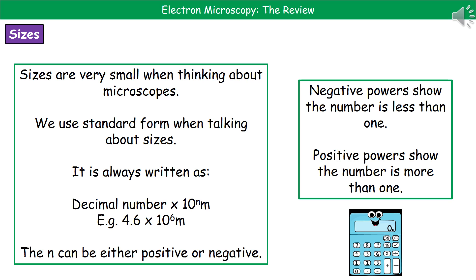One of the math skills you need on your GCSE science papers is standard form. Because when talking about microscopy we're dealing with very tiny things, we use standard form. You always write it as a decimal number times 10 to the power n metres — for example, 4.6×10⁶ metres. Remember the power can be positive or negative. A negative power tells us the number is less than one, so when talking about microscopes it will always be a negative figure.